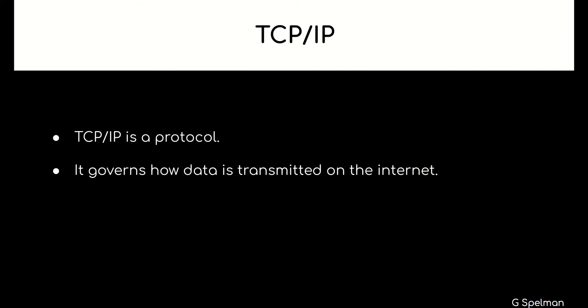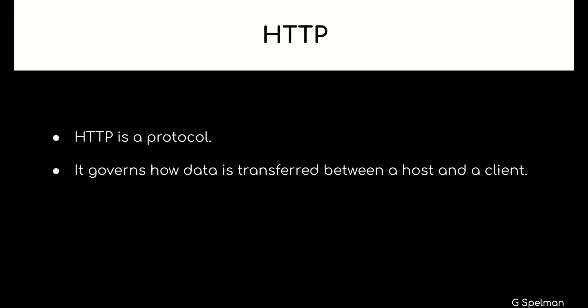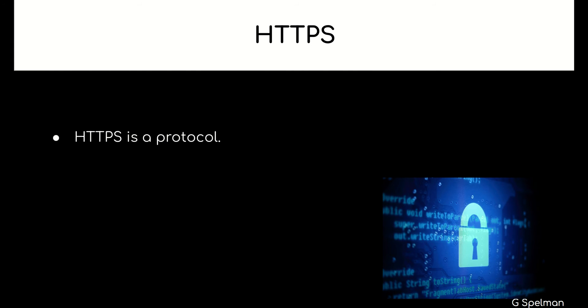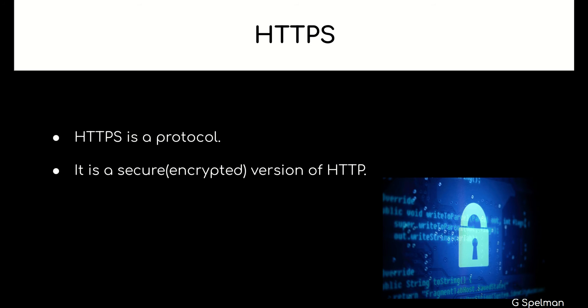TCP/IP is a protocol. It governs how data is transmitted on the internet. HTTP is a protocol. It governs how data is transferred between a host and a client. HTTPS is a protocol — it is a secure version of HTTP.